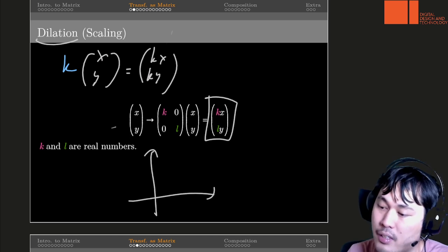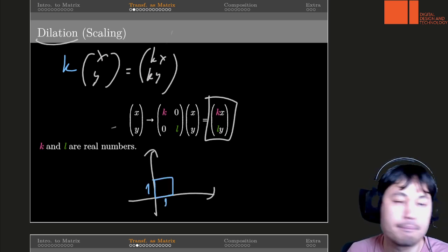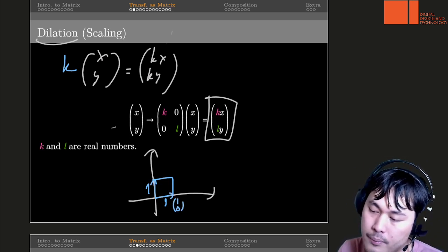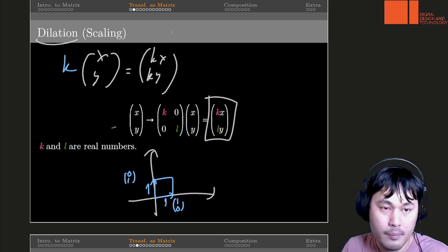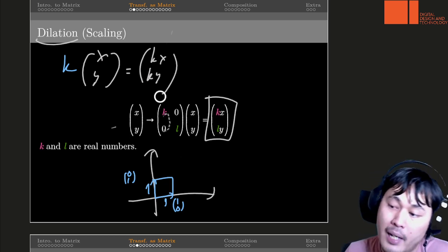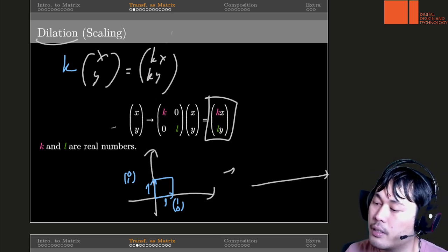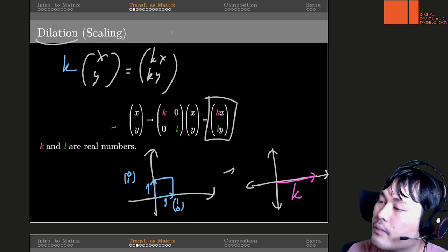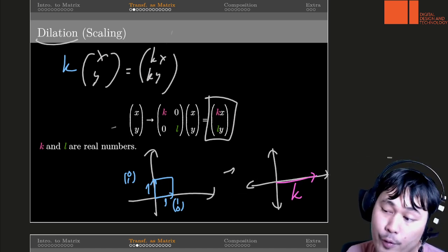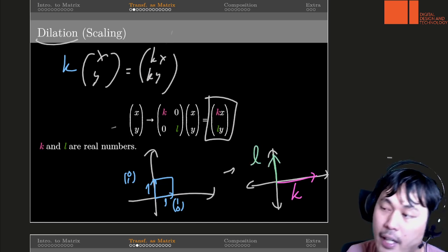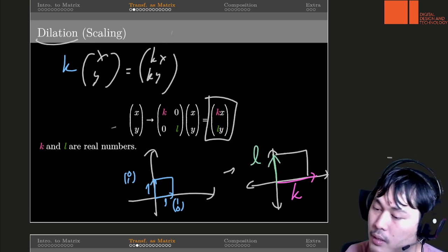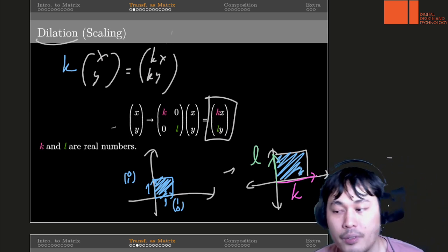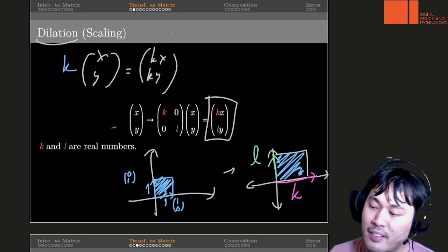So that's a dilation. If you start with a box of length one — just vectors (1,0) and (0,1) to make a box — after we multiply everything on the plane by this matrix, the result is a dilation where the x coordinate becomes k. The horizontal line becomes a vector of length k, and the vertical one becomes a line of length l. Together the result is a new rectangle with different side lengths.